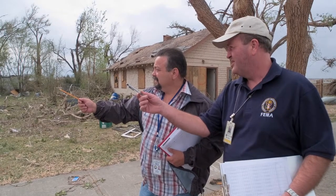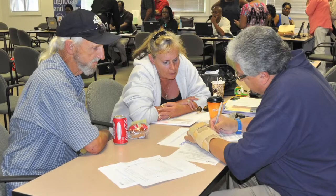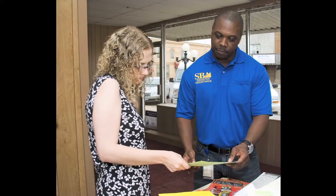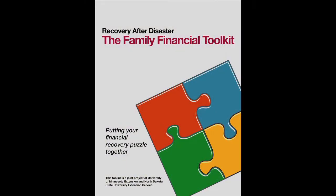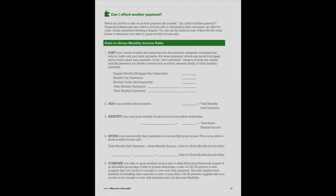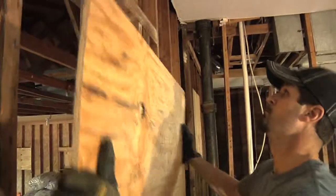The SBA will determine whether an applicant can obtain credit elsewhere. Survivors who qualify for an SBA loan may choose to accept the loan or turn it down. Those who do not qualify may be referred to the Unmet Needs Committee if one has been established in their community. You will want to make sure you know how much of a payment you can afford. The Recovery After Disaster Family Financial Toolkit has a worksheet to help you determine whether or not you can afford an additional payment such as an SBA loan. We walked through those worksheets — figured out where our bills were before, what we were projecting for new expenses with those loans, and that helped us decide which loans we could take, what our maximum expenditures were going to be, and then even it all out from that point.